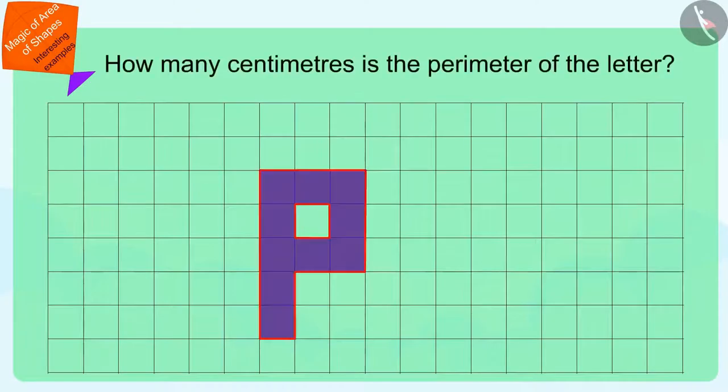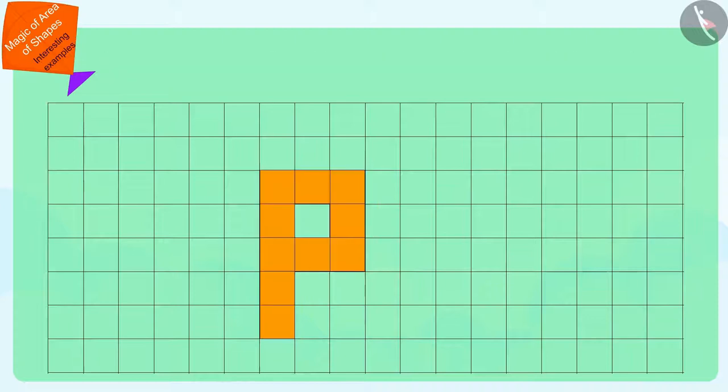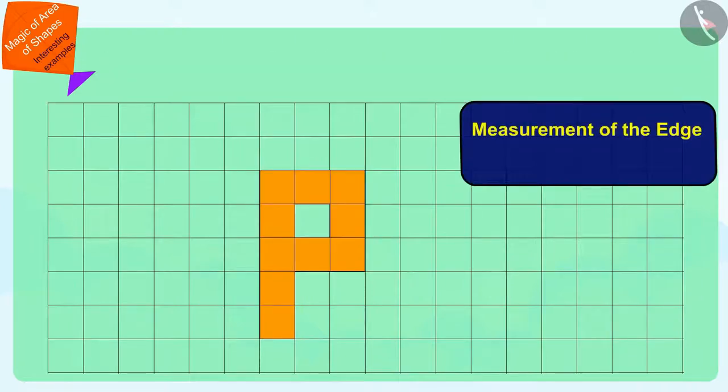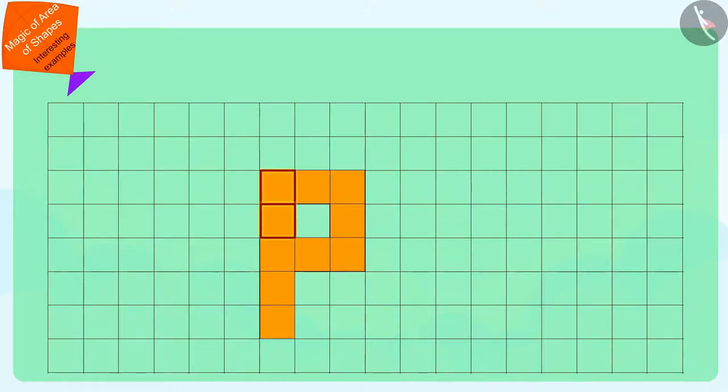Let us see how many centimeters is the perimeter of P that Pinky has created. We can find it very easily. The measurement of the edge of a square is 1 cm. So, to find the perimeter of this letter,